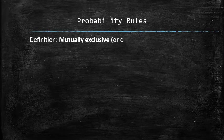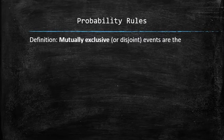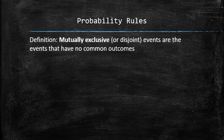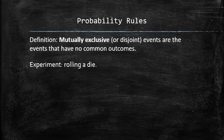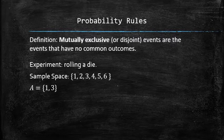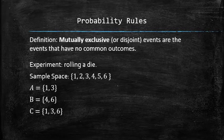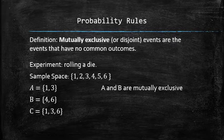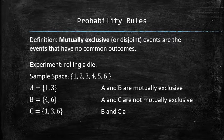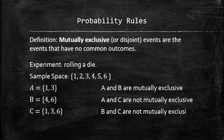Mutually exclusive or disjoint events are events that have no common outcomes. For example, in the experiment of rolling a die, let A be the event {1, 2, 3}, B be the event {4, 5, 6}, and C be the event {1, 2, 3, 6}. A and B are mutually exclusive because they have no common outcomes. The same cannot be said about events A and C, or B and C, because they share at least one common outcome.